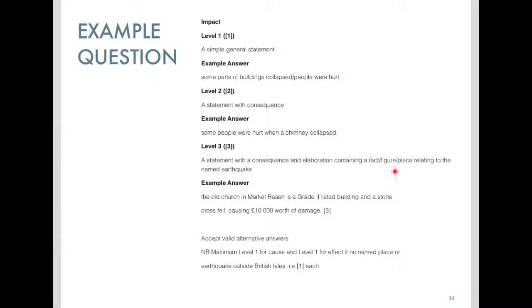Down here to Level 3: a statement with a consequence of elaboration containing a fact, figure, place. The old church of Market Rasen is a Grade 2 listed building and a stone cross fell causing £10,000 worth of damage. Therefore you can see how our notes and our plan both equal top Level 3, 5 out of 5 for this answer.